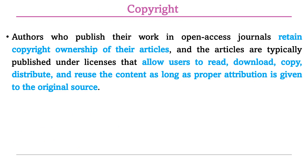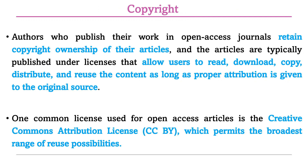There is some important information to understand about copyright in open access journals. Authors who publish in open access journals retain their copyright ownership. Articles are typically published under a license that allows users to read, download, copy, distribute, and reuse the content, as long as proper attribution is given to the original source. The common license used is the Creative Commons Attribution License, CC BY, which permits the broadest range of reuse possibilities.